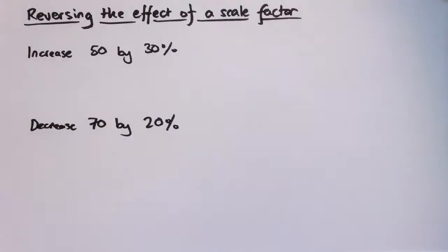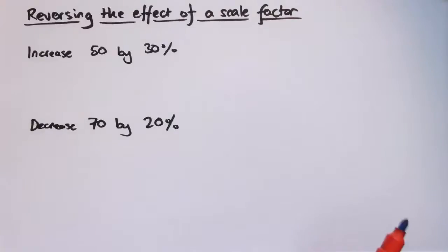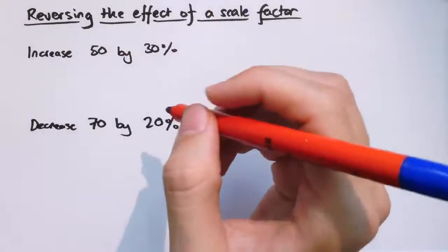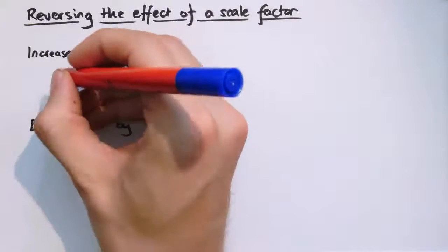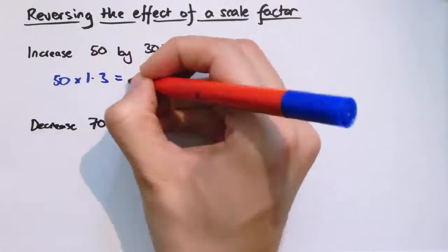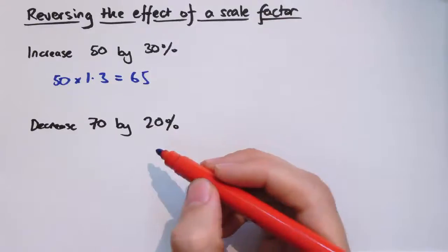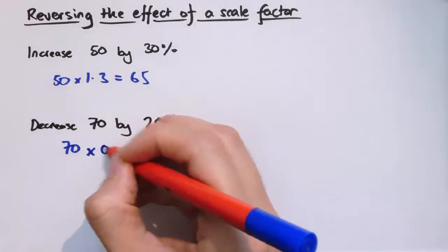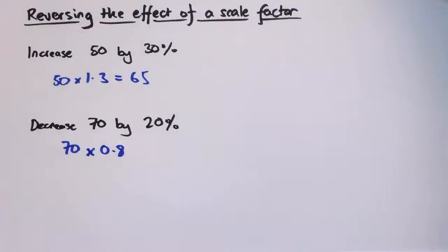There are a lot of problems where we effectively want to undo the effect of a scale factor. For example, if something has been reduced by 25%, we want to undo that reduction. Here are the basic sort of problems: increase 50 by 30% — that's 50 times 1.3, which gives us 65. And decrease 70 by 20% — that would be 70 times 0.8, which is 56.